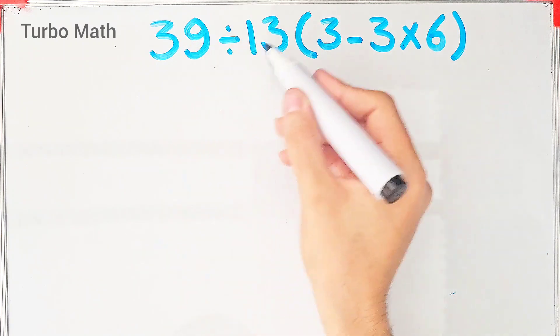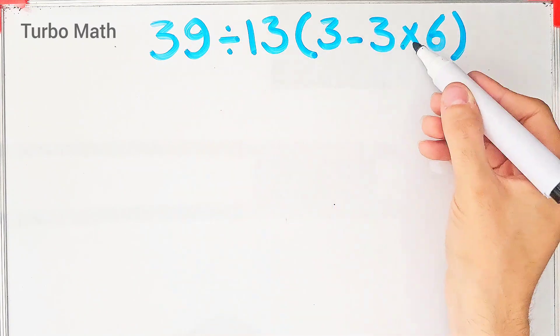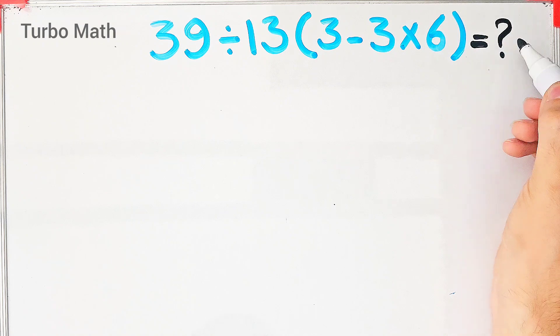39 divided by 13, then times 3 minus 3 times 6. What is the answer of this question? Can you solve it?